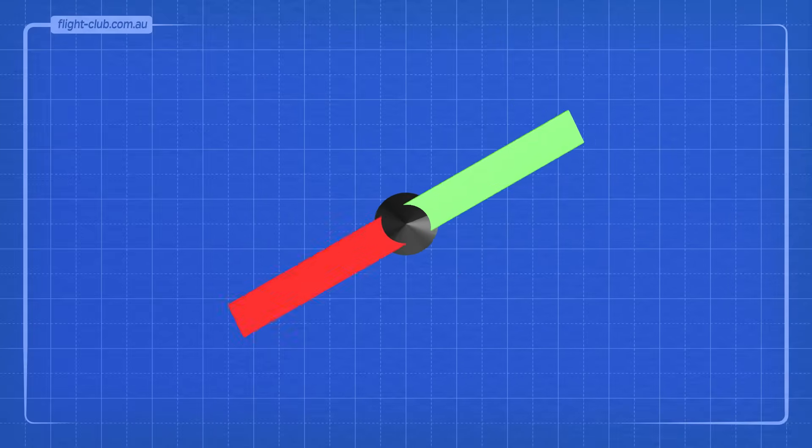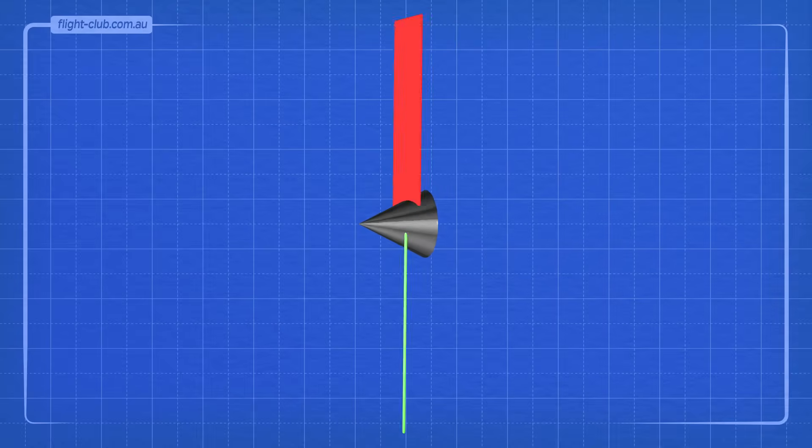For this demonstration, let's assume a propeller has two flat-shaped blades attached to the front of an aeroplane.